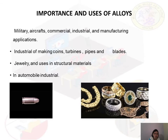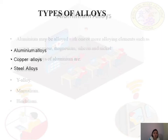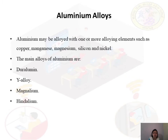There are three important types of alloys: aluminium alloys, copper alloys, and steel alloys. In your syllabus, you have two of these: aluminium alloys and steel alloys. We will be learning in detail about aluminium alloys and steel alloys.